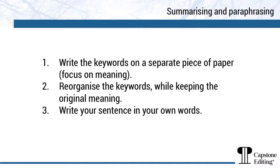If you take sentences completely from the original source and just change a few words, this isn't paraphrasing and it could be considered plagiarism. For some students, especially if English is your second language, the temptation to use a source's original wording is high. To avoid this, try using the following strategy. First, after reading and understanding the author's ideas, write just a few of the keywords on a separate piece of paper, then see if you can change some of the keywords to other words while keeping the original meaning. Second, think about whether you can reorganise the order of the keywords to write sentences that keep the original meaning but are quite different to the original — this could mean flipping the sentence. Third, using your keywords and without referring to the original source, write your new sentences. It takes a while at first, but the process becomes automatic with practice.